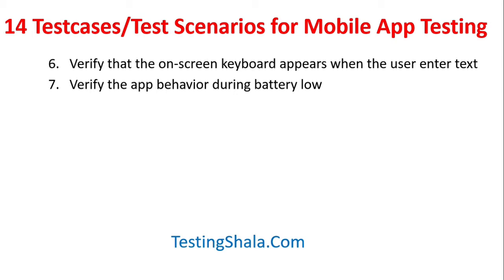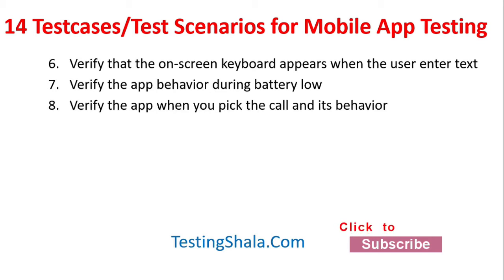The eighth scenario is: whenever you open the app and are performing operations, and you suddenly get a phone call, you pick that call, speak to the other person, then disconnect the call and come back to your app to continue your work — your app should not crash. It should seamlessly continue to work even after picking or disconnecting a call. This is the eighth important test scenario.